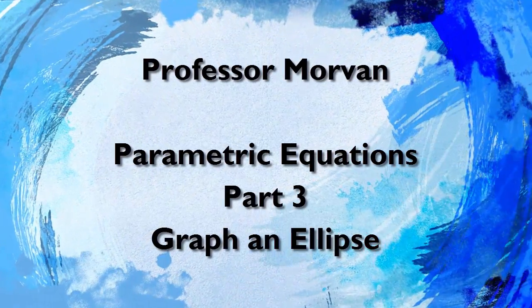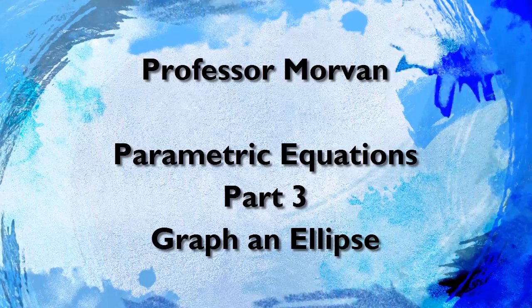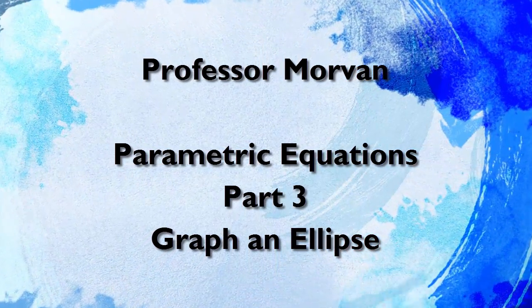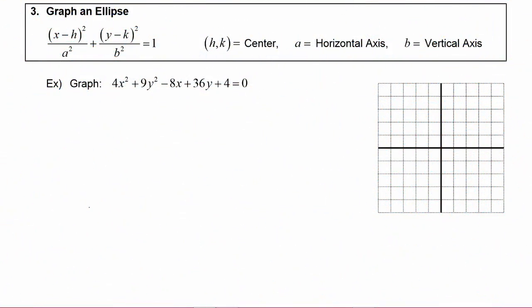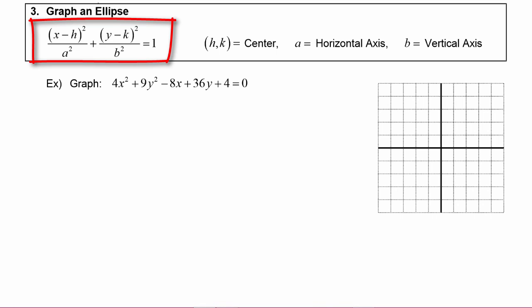In part three of our lesson on parametric equations, we will review how to graph an ellipse. Equations in the form x minus h quantity squared over a squared plus y minus k quantity squared over b squared equals one. We'll graph an ellipse where h, k is the center of the ellipse, a will be the horizontal axis, and b will be the vertical axis.